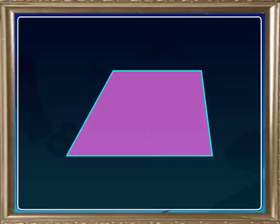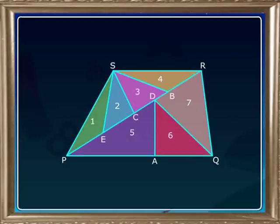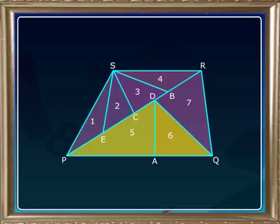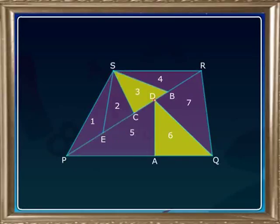In this diagram, the quadrilateral PQRS is divided into seven triangular regions. We can also observe that any two of the seven triangular regions intersect. Their intersection is a line segment or a single point set.